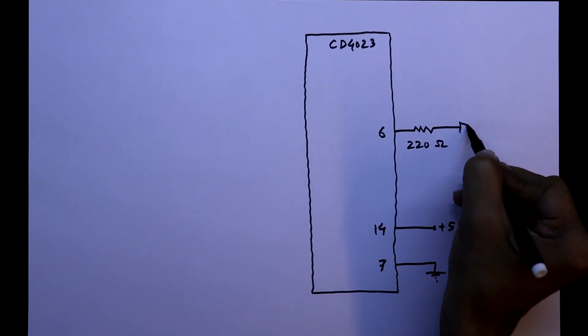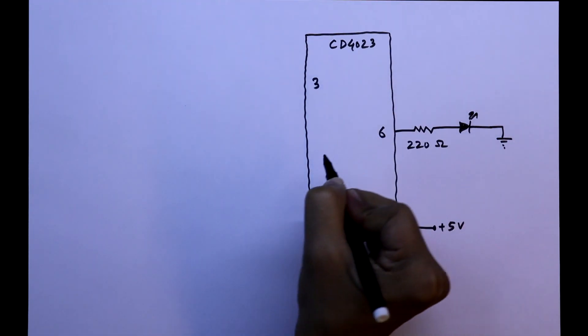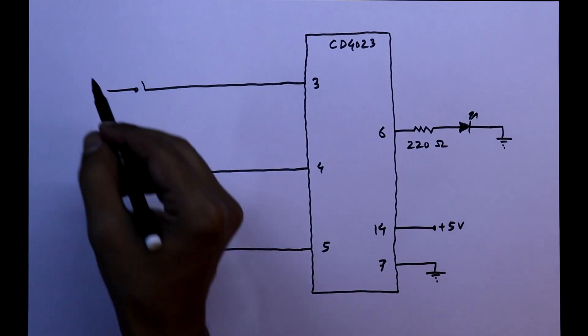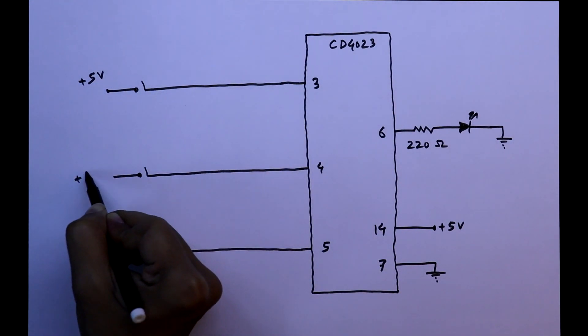Pin 3, 4, 5 are the input. And with this we will connect a switch. And other pin of the switch is connected to the plus 5V.